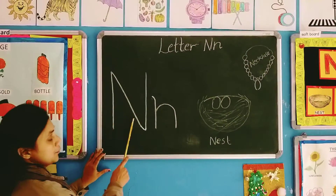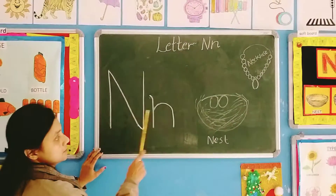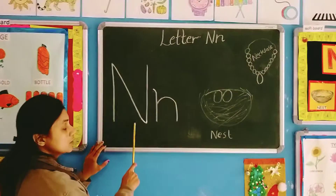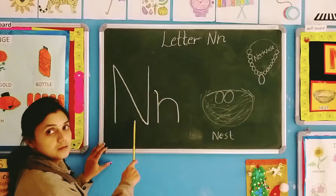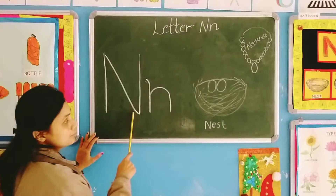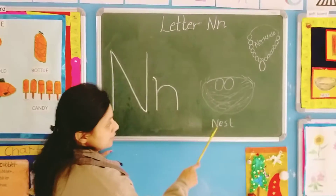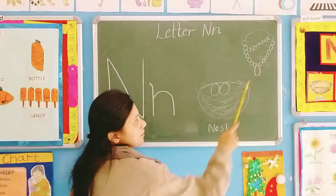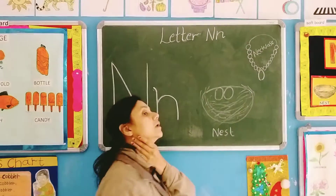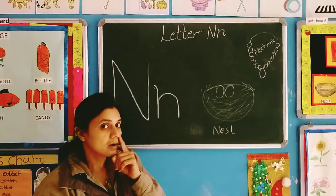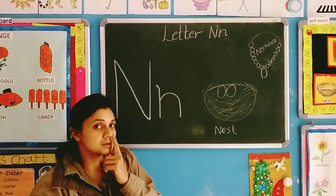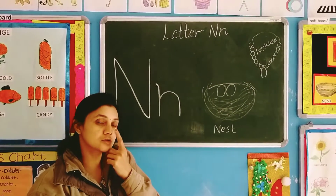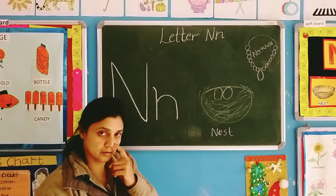Once again — capital N, small n, and its sound is N. Which is this? This is nest. Neck. Or what is this? This is a nose. It also starts with N.